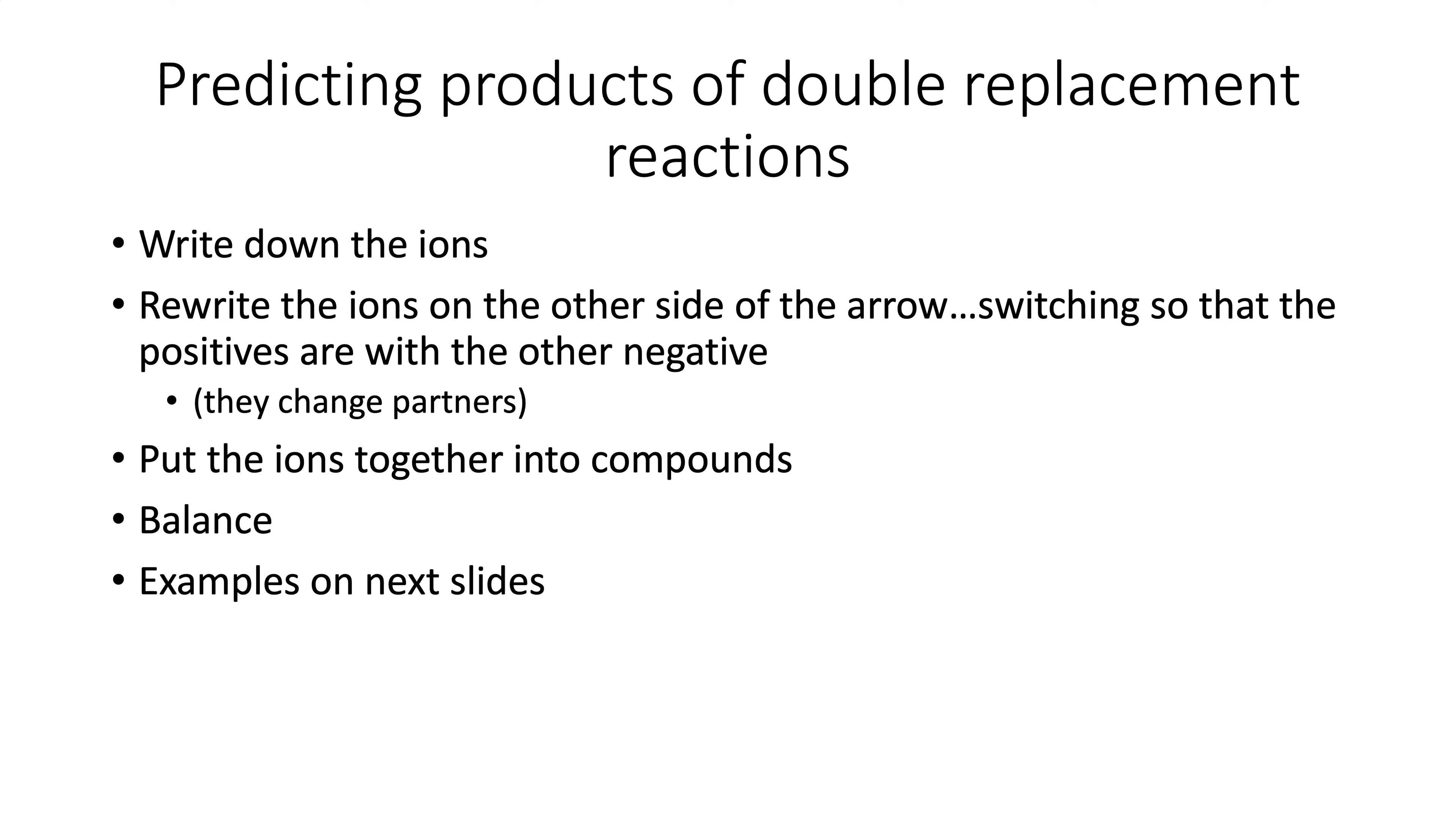Predicting products is a little tricky. Here's the steps. You want to write down what the ions are. Rewrite the ions on the other side of the arrow. What's going on in double replacement reactions is reactions of ionic compounds. If you put them in water, the positive from one could associate with the negative from the other. Rewrite the ions on both sides, then put the ions together, and then balance it.